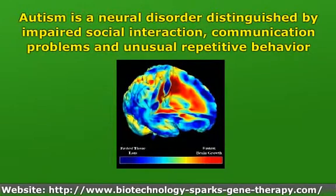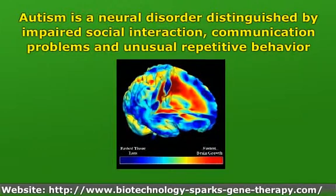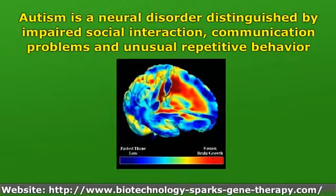The autistic brain differs dramatically from a healthy one. There are consistent differences in how genes in autistic and normal brains encode information. Gene expression in most autistic brains is similar to each other, but is different from gene expression in normal ones.